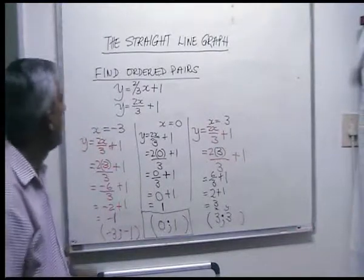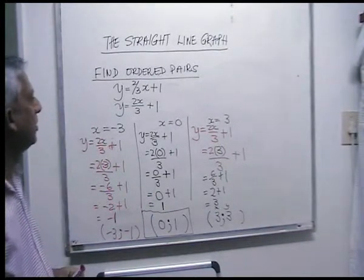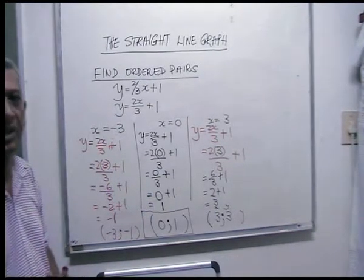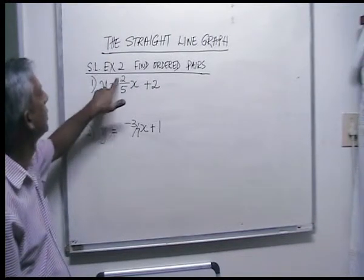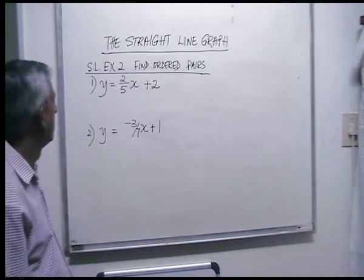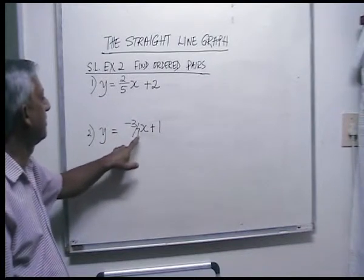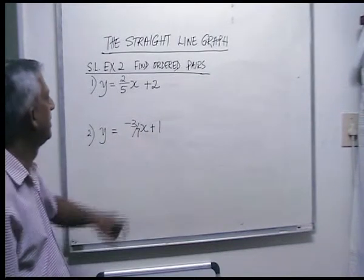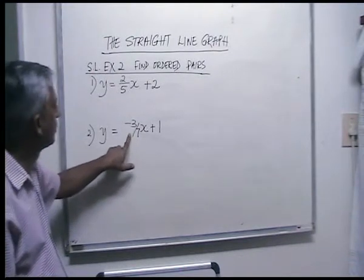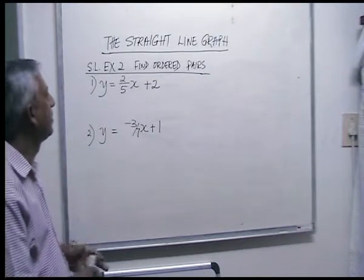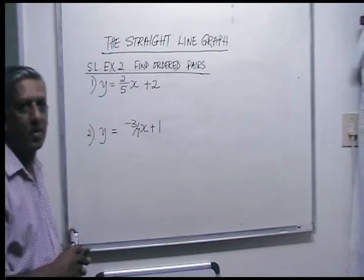That's how you do an example with fractions. Now here are two examples. Number one: y is equal to two over five x plus two. Number two: y is equal to minus three over seven x plus one. Look at the denominator and choose your ordered pairs wisely so you end up with nice round numbers.